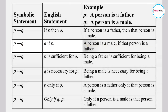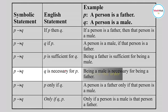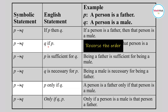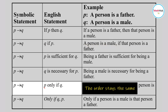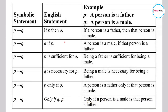For 'p is sufficient for q,' you write this as p → q. If you have 'q is necessary for p,' this is also written as p → q. Additionally, 'p only if q' is different from just 'if' — if you have 'only if,' that means p → q as well. So whenever you see the word 'only' before 'if,' you write p first and then → q.